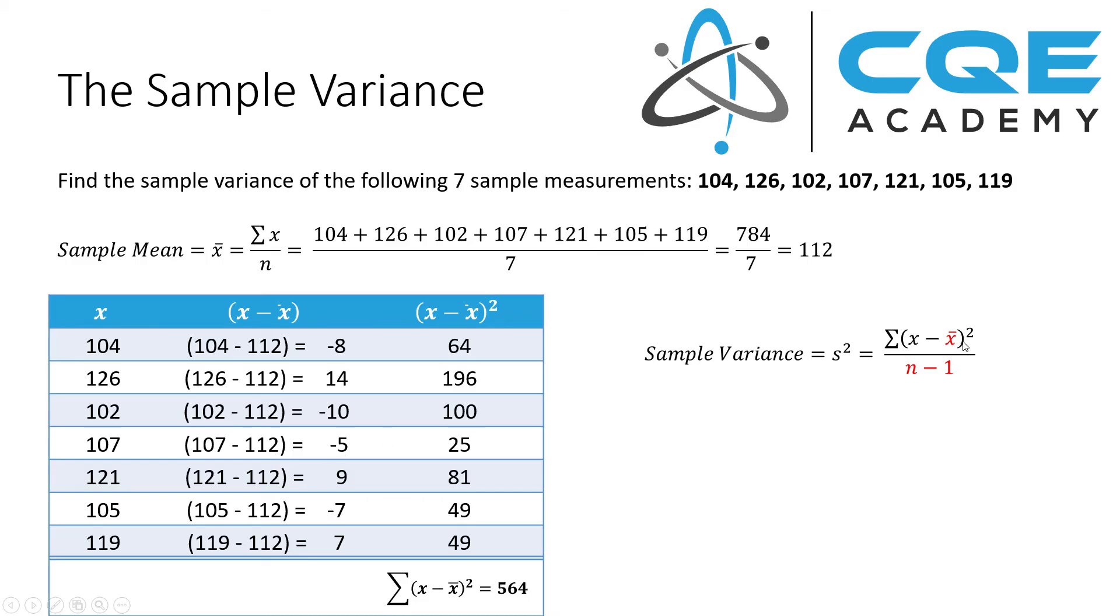The next operation in the equation is to simply square that value. So minus 8 squared is 64. 14 squared is 196. Minus 10 squared is 100. Minus 5 squared is 25. 9 squared is 81. And then we have to sum up this column, which equals 564.